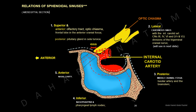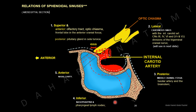Relations of the sphenoidal sinuses. The diagram is the mid-sagittal section of the sphenoidal sinus. Superiorly and anteriorly is the pituitary gland in the sella turcica. Laterally is the cavernous sinus with the internal carotid artery, cranial nerves III, IV, VI, and the first and second divisions of the trigeminal nerve. Posteriorly is the middle cranial fossa, basilar artery, and brain stem. Inferiorly is the nasopharynx and pharyngeal lymph nodes. Anteriorly is the nasal cavity.